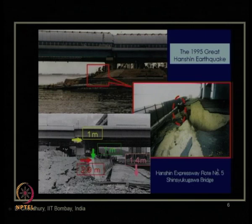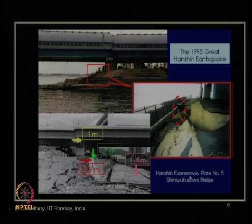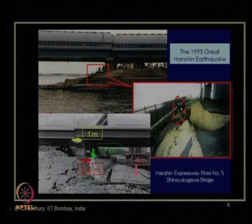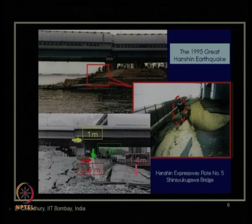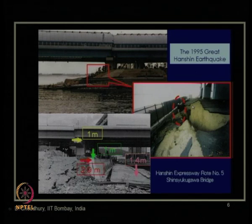Looking at this bridge in the Hanshin expressway route number 5 after the damage, you can see a typical human being's height compared to the amount of vertical and lateral displacement, which is much more than even a human's height. This comparison helps us understand how much settlement or movement can occur after liquefaction and lateral spreading.